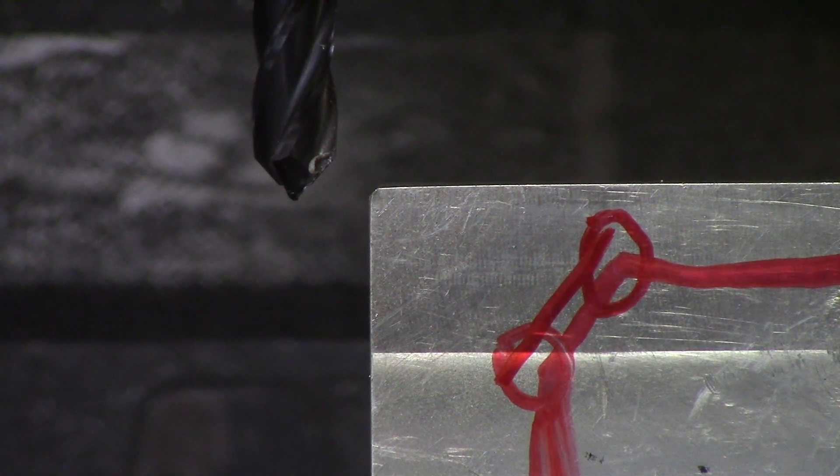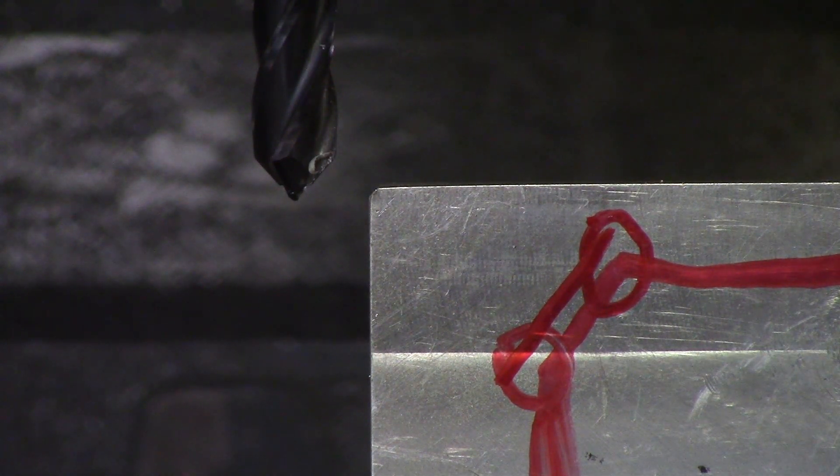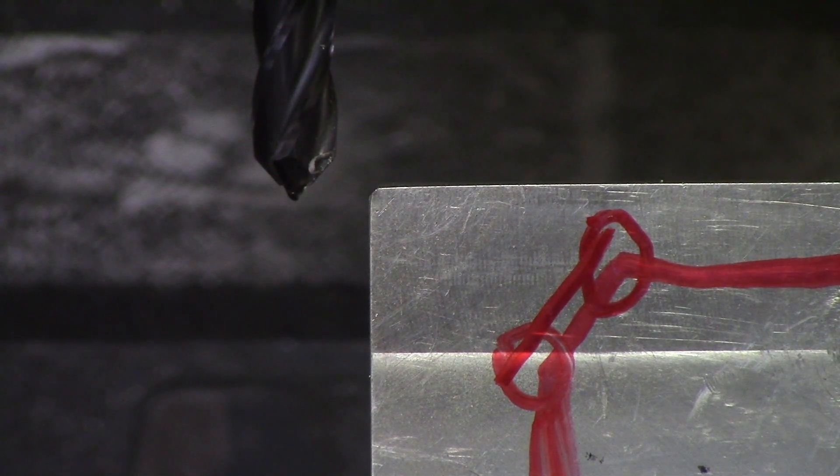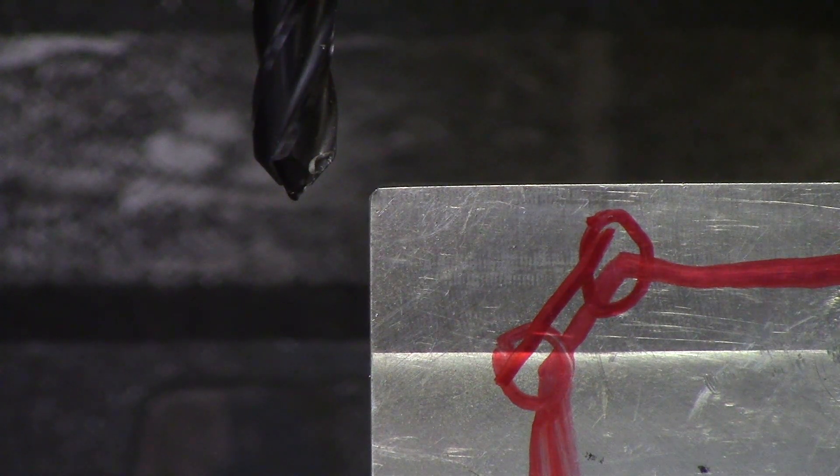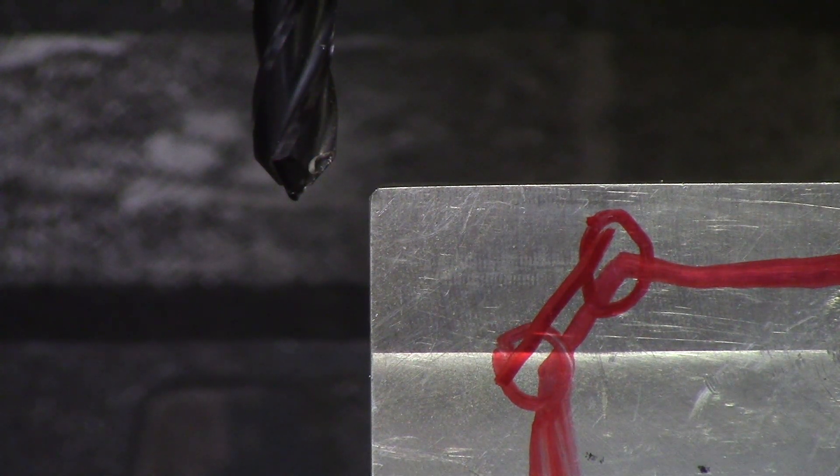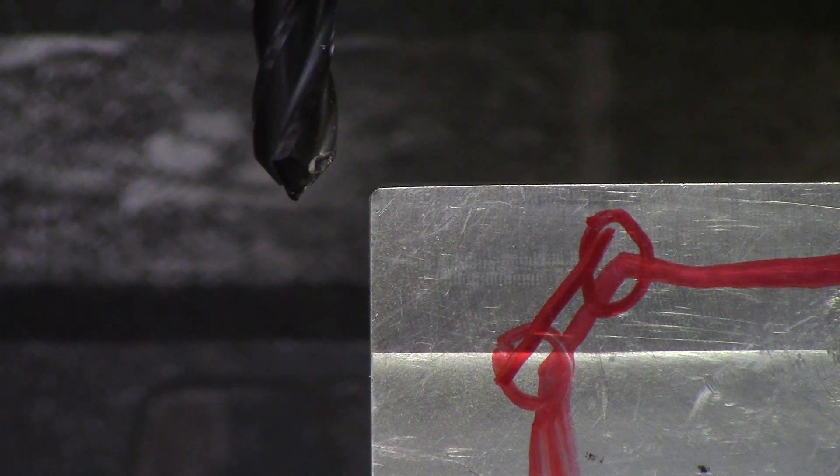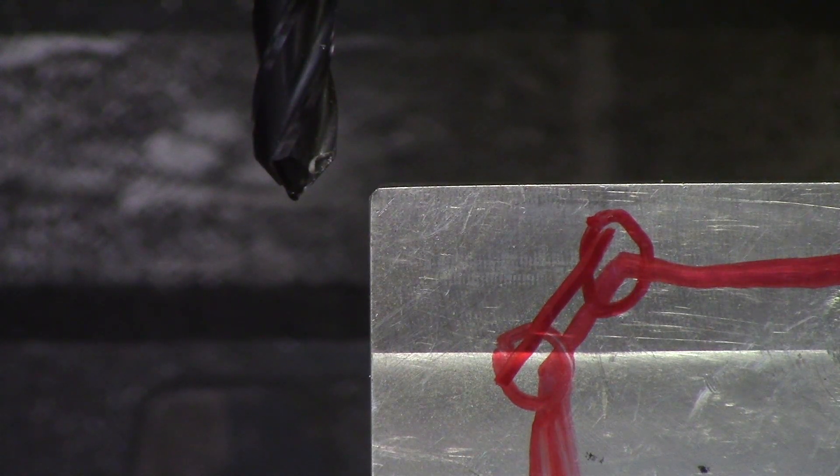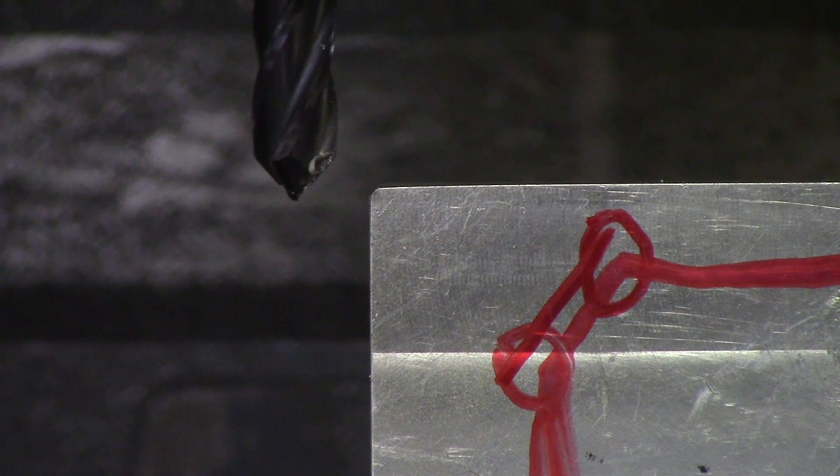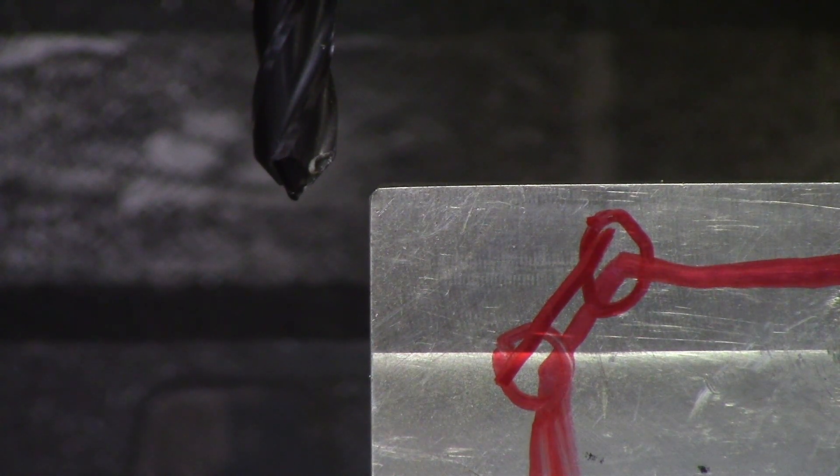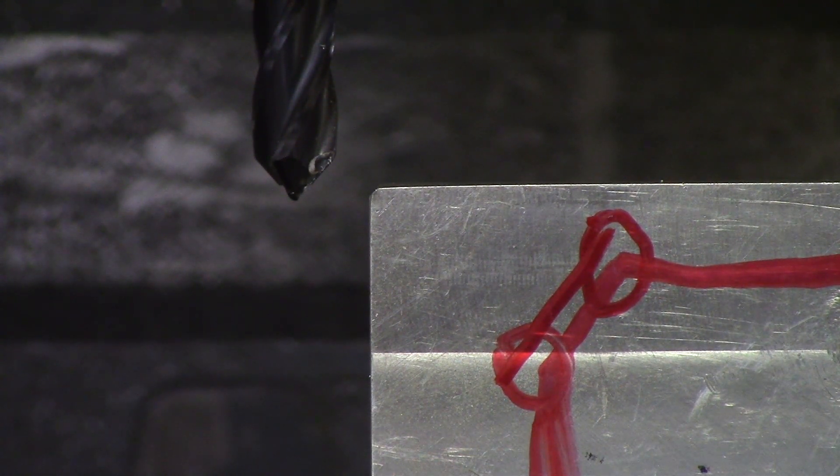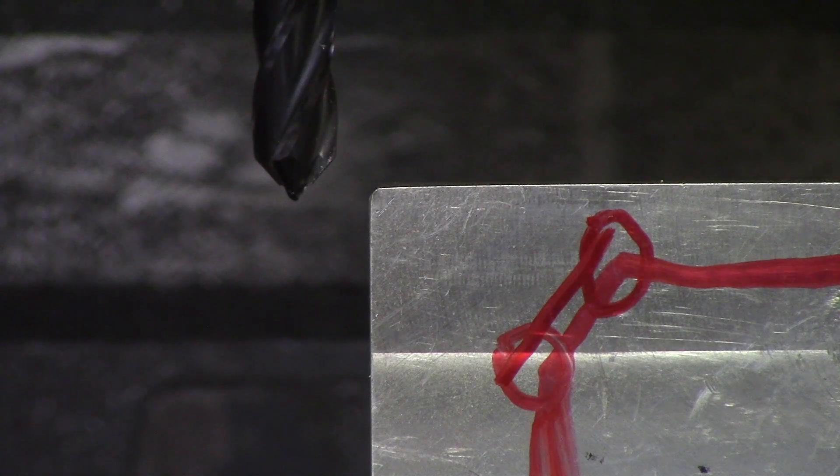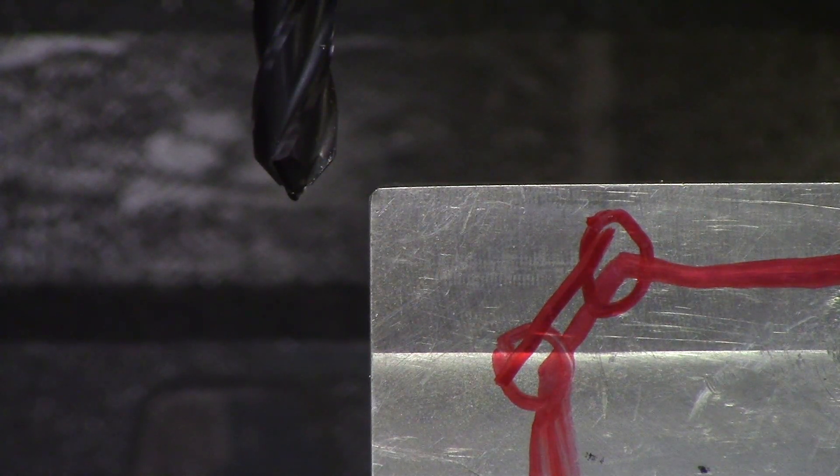Let's say we measured out a hundred thou, so we got point one. Now we want point two. What you need to do is take what you want minus what you have. Point two minus point one is point one, divide that by two. That's fifty thou. Then bring your knee up fifty thou and take another cut. You should have the right measurement unless you measured wrong. Take a second and third measurement and slowly work it in from there.